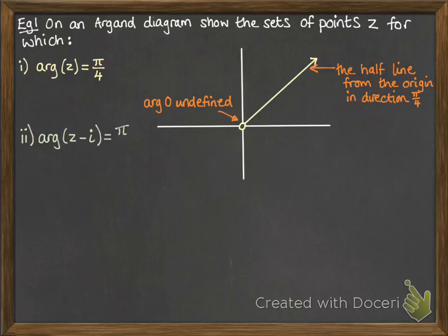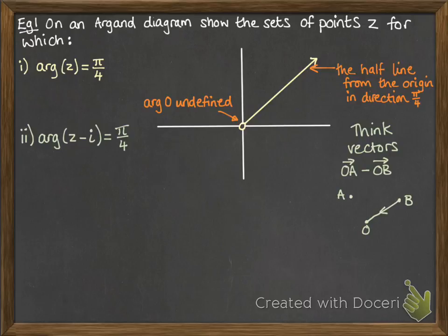Okay, how about the argument of z minus i equals π/4? So think about vectors here. If you had OA minus OB, then in vectors that would be going the reverse of OB and forwards of OA, which gives you the vector B to A.